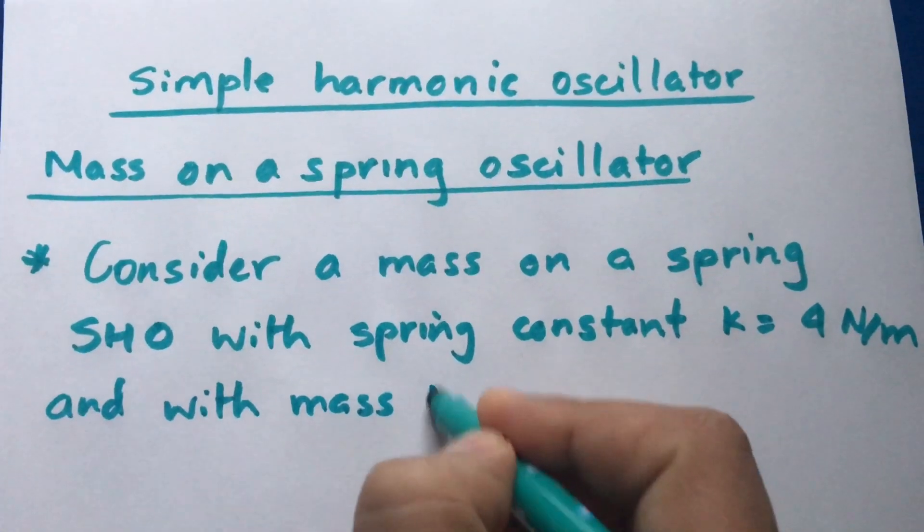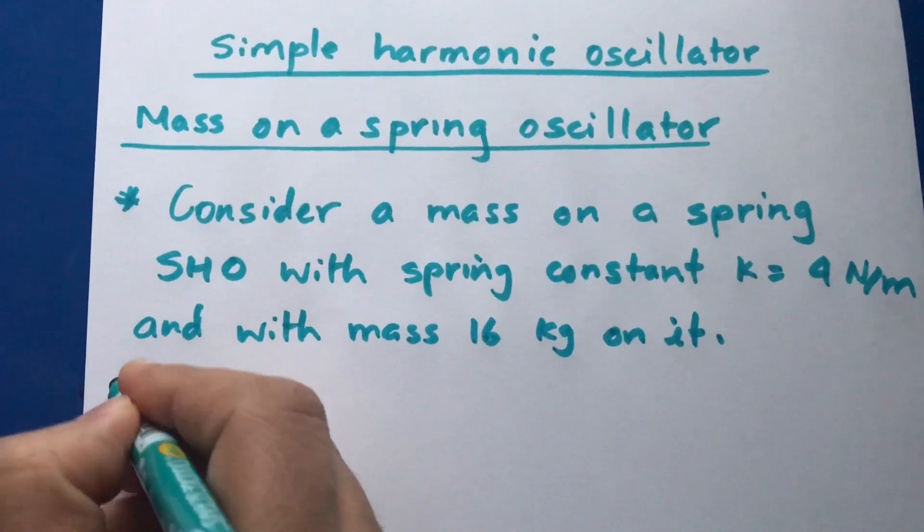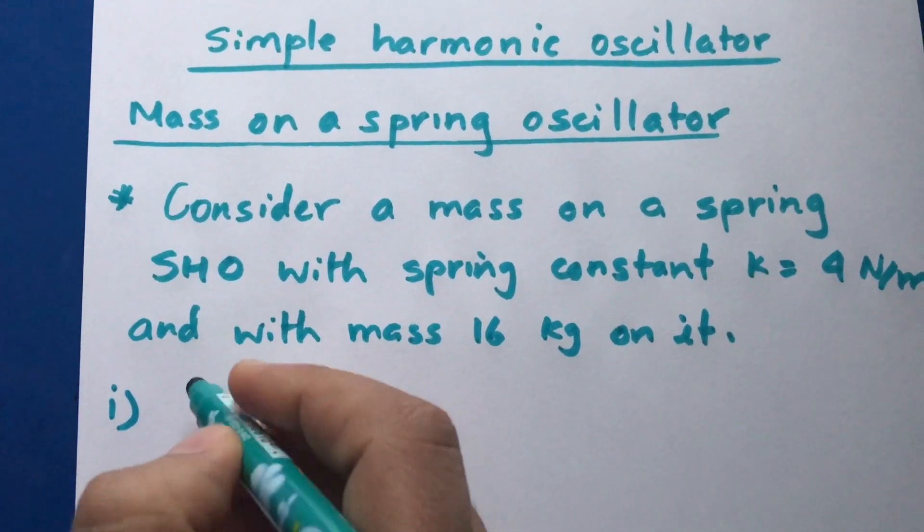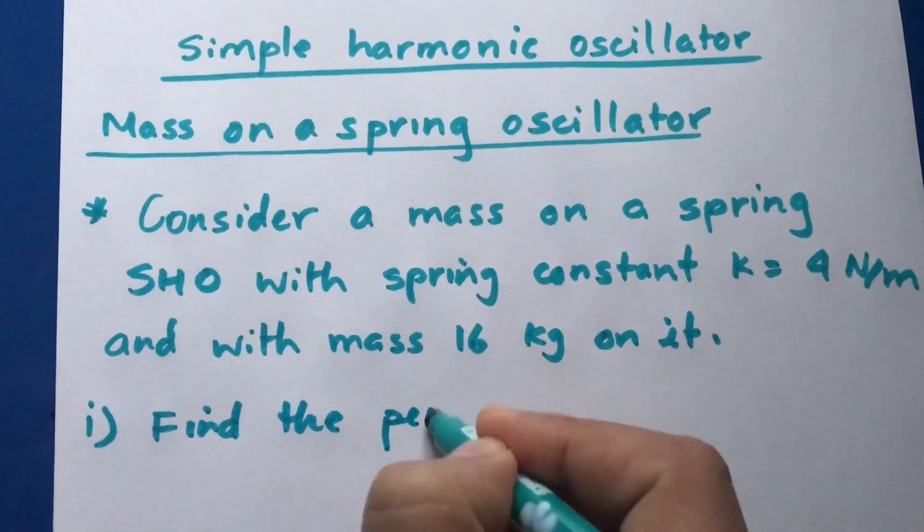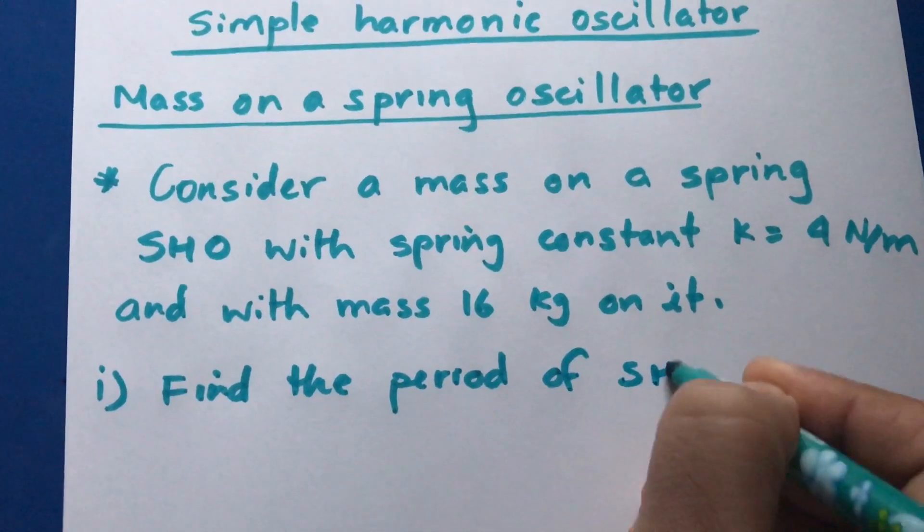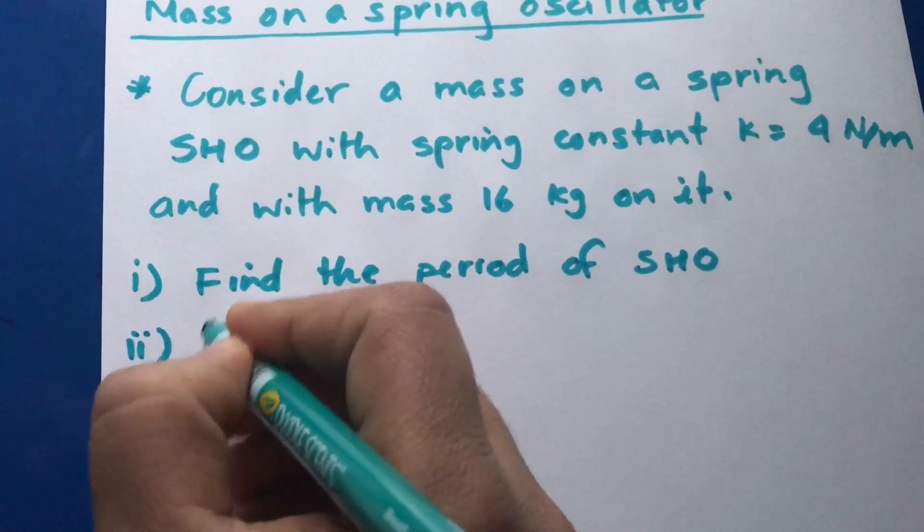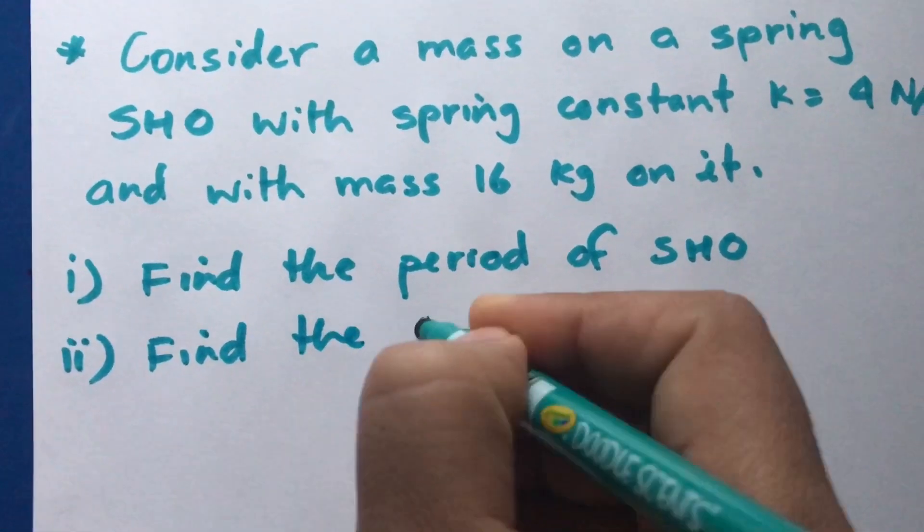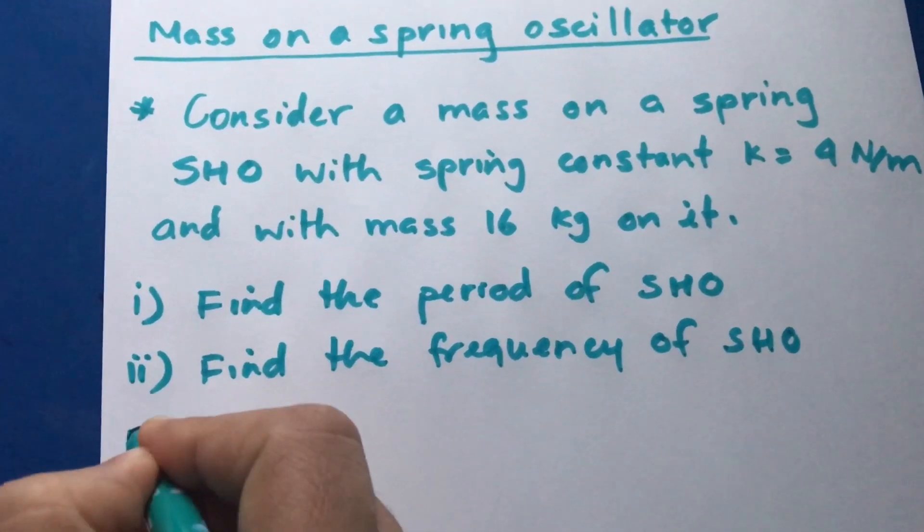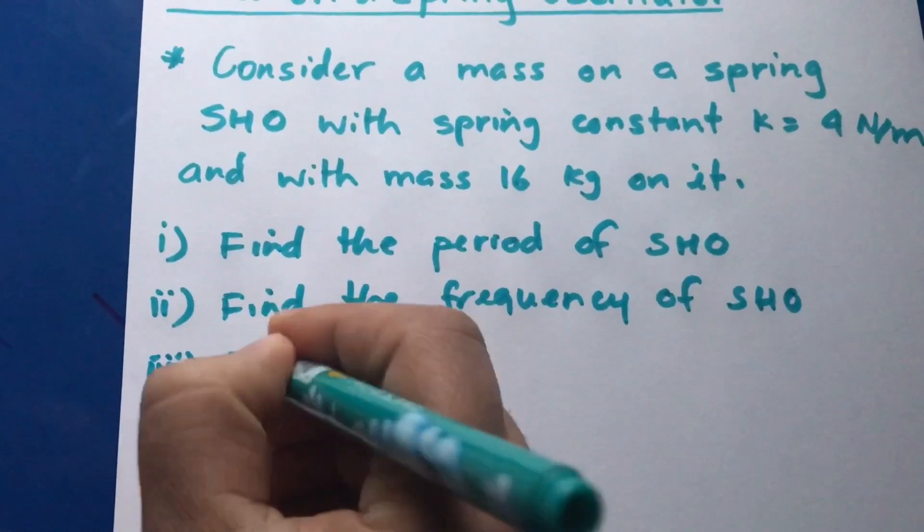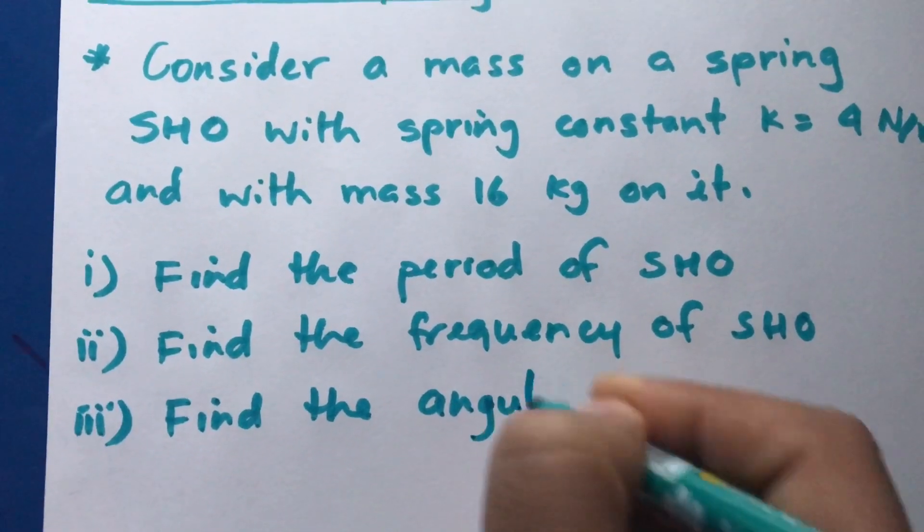The first question reads: We have to find the period of this oscillator, then we have to find the frequency of it, and then find the angular frequency.